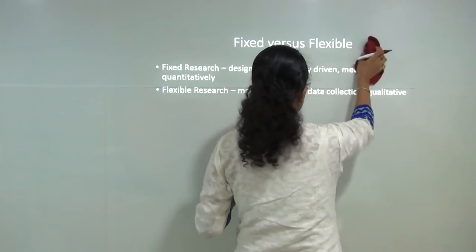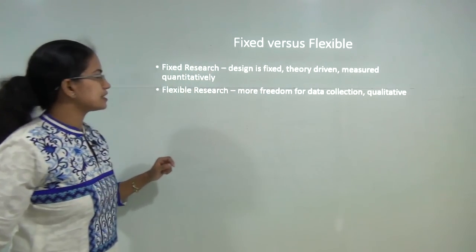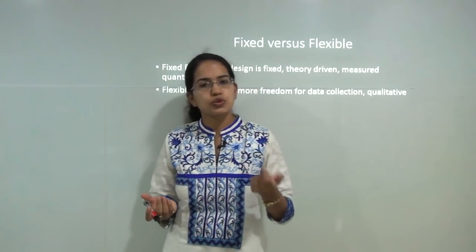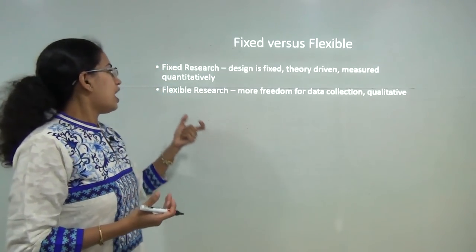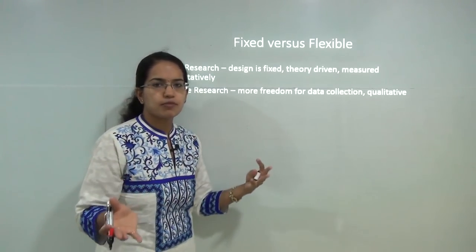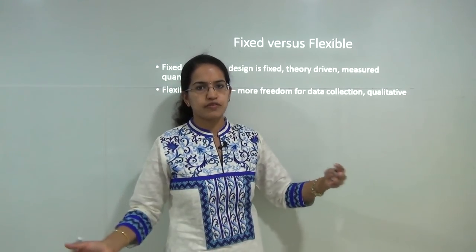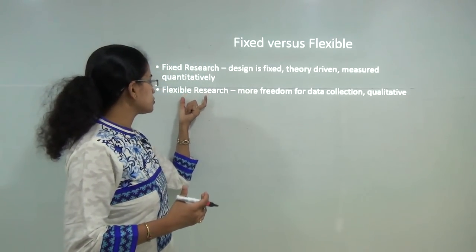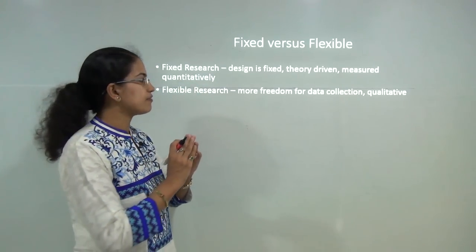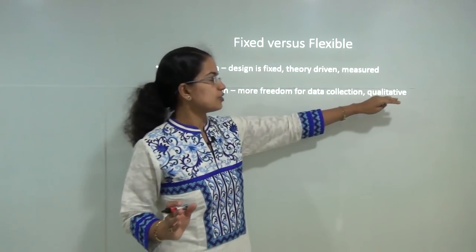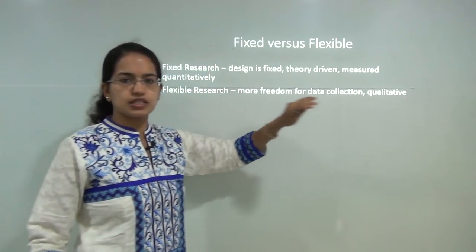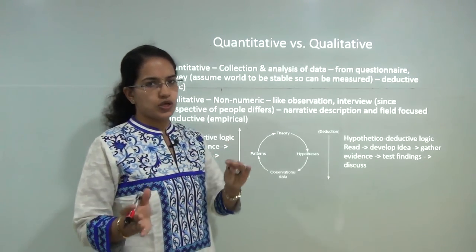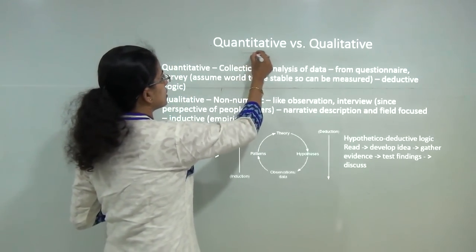The next type is fixed versus flexible research. Fixed research has a design that is fixed, is driven by theory, and is measured quantitatively — since you have fixed parameters, measurement is through numbers. Under flexible research, you have more freedom of data collection: through interviews, surveys, telephonic questionnaires. All those come under flexible research where there is more than one dimension, and flexible research is qualitative in nature.